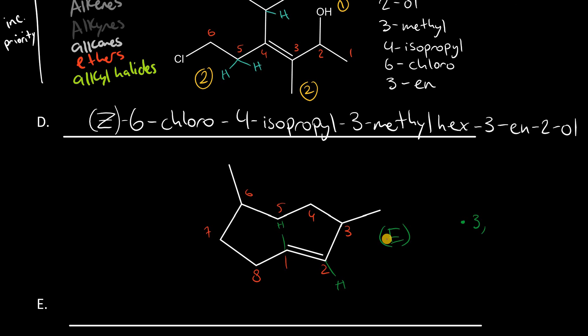So, this is the E isomer. We have a 3,6-dimethyl. Our parent compound is octene with the double bond by default at carbon 1. And, then we just put the name together. So, the name would be E, 3,6-dimethyl-cyclo-oct-1-ene.